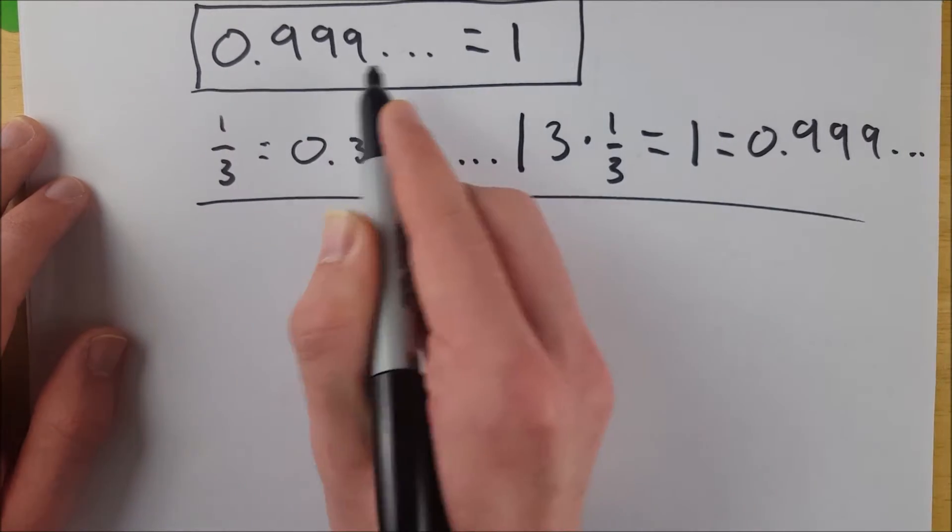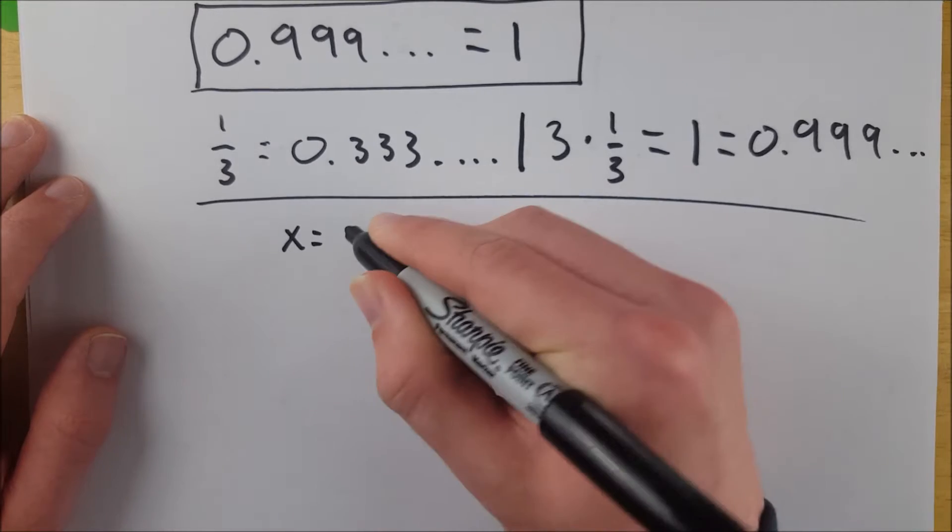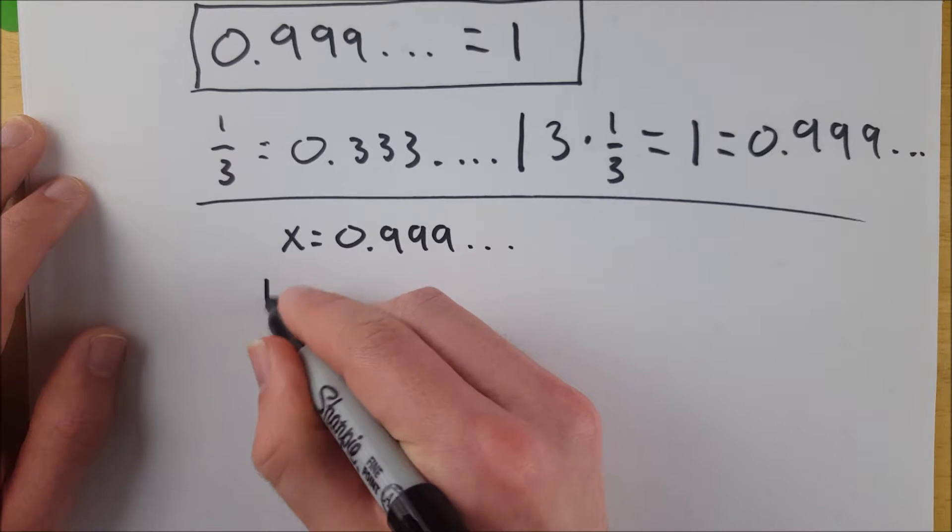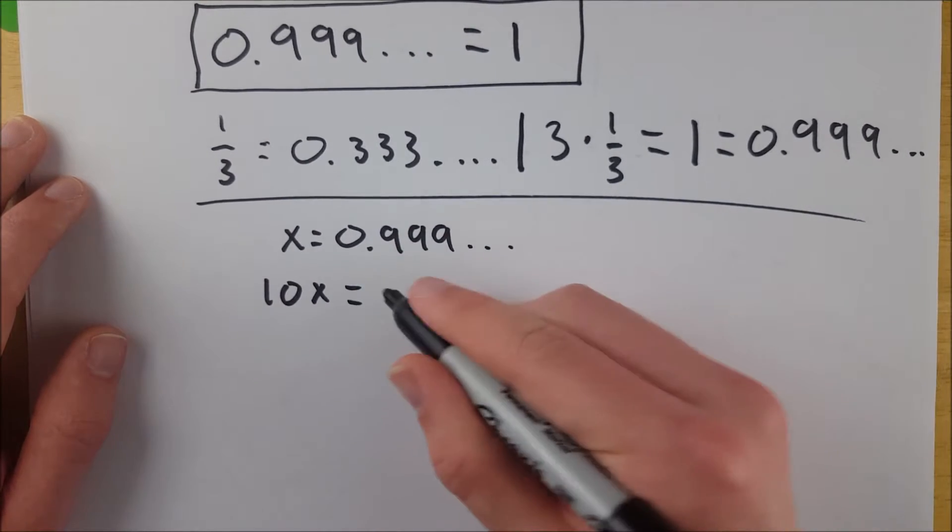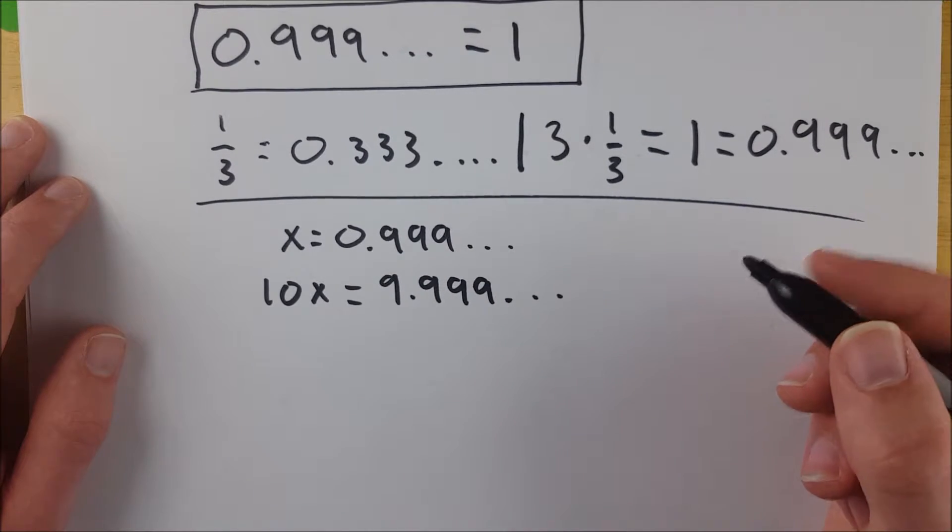So let's say we're going to set this equal to a variable. Let's just use x. So we have x equals 0.999 repeating on forever. And now we're going to multiply both sides by 10. So we have 10x equals 9.999, and that's repeating on forever as well.